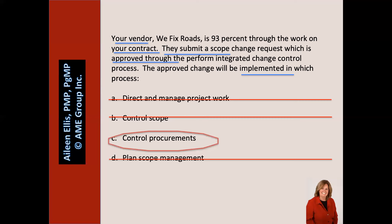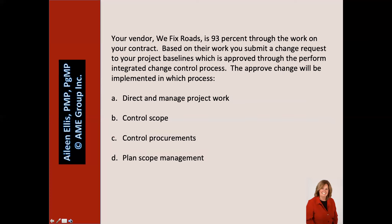We're going to look at a second question — a similar question, though the answer is different. Your vendor, We Fix Roads, is 93% through the work on your contract. Based on their work, you submit a change request to your project baselines, which is approved through the Perform Integrated Change Control process. The approved change will be implemented in which process? Pause the video and answer the question.